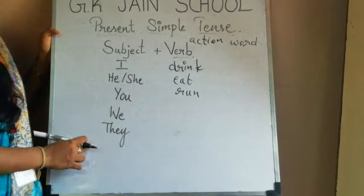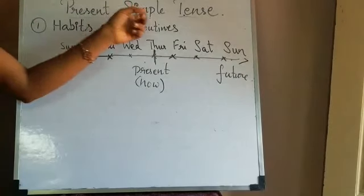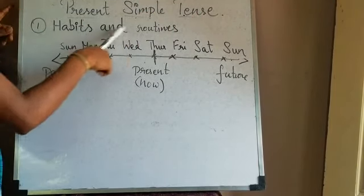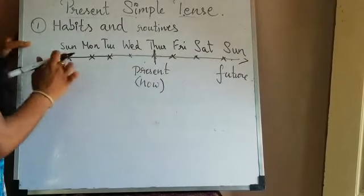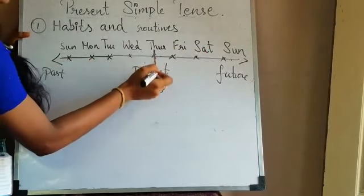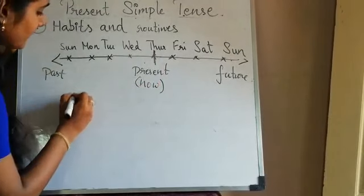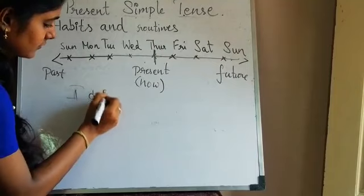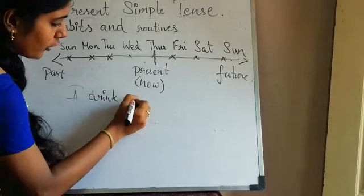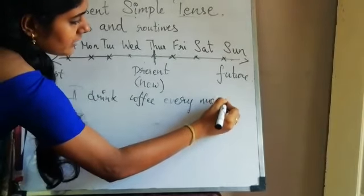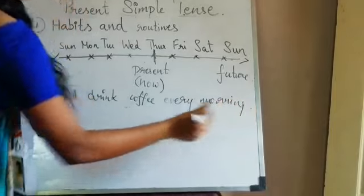Shall we form a sentence, children? Present simple tense — where is it used? First one is habits and routines. Let us take a timeline. Assume we are currently on Thursday. I drink coffee every morning. This sentence means I habitually drink coffee every morning. This is simple present tense.